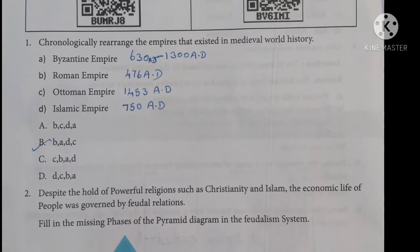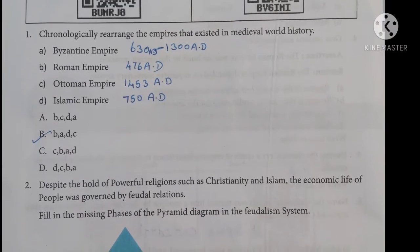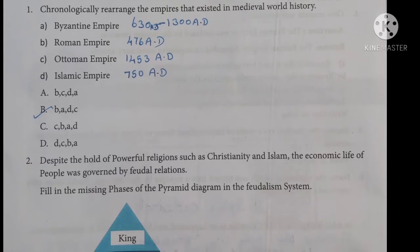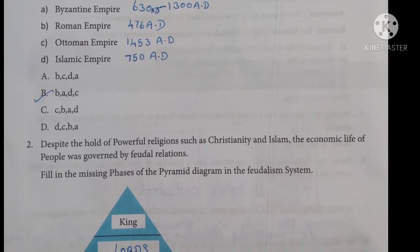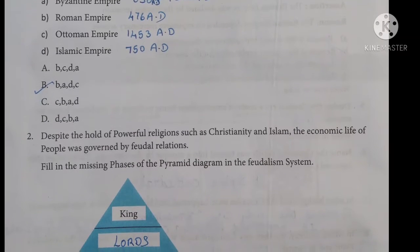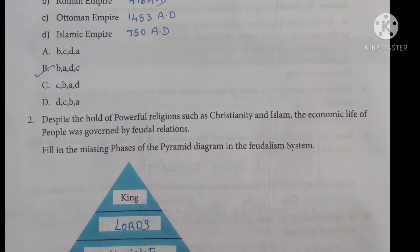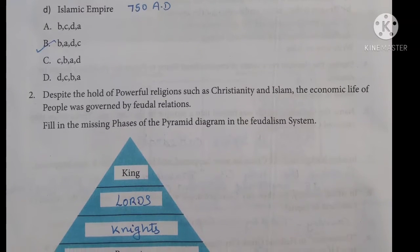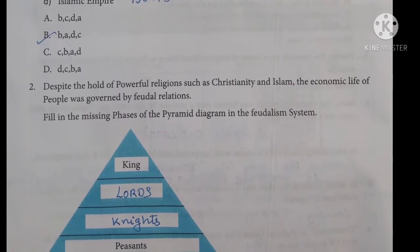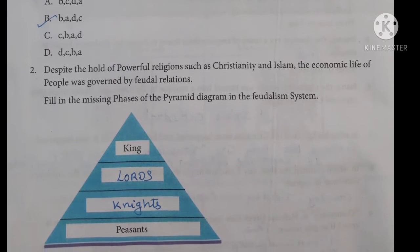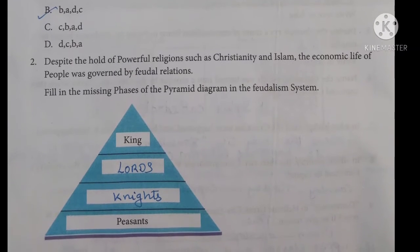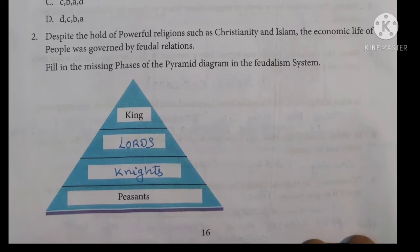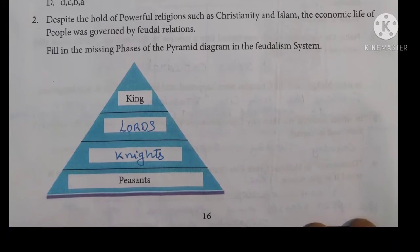The second question: despite the hold of powerful religions such as Christianity and Islam, the economic life of people was governed by feudal relations. Fill the missing bases of the pyramid diagram in the feudalism system. The feudalism system has one order that comes to the end — the two key things are the king, and the lords and knights. Knights are the essence.